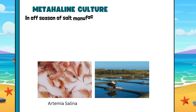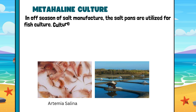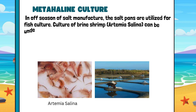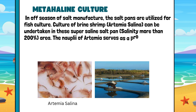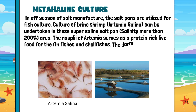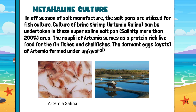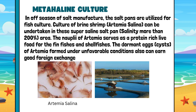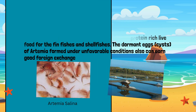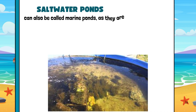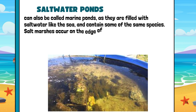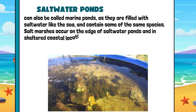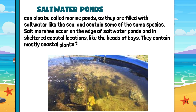Metahaline culture: In the off-season of salt manufacture, the salt pans are utilized for fish culture. Culture of brine shrimp, Artemia salina, can be undertaken in the super-saline salt pan at salinity more than 200 parts per mille. The nauplii of Artemia serve as a protein-rich live food for fin fishes and shellfishes. The dormant eggs, or cysts, of Artemia formed under unfavorable conditions can also earn good foreign exchange. Saltwater ponds can also be called marine ponds as they are filled with salt water and contain some of the same species.